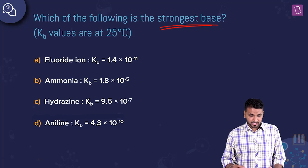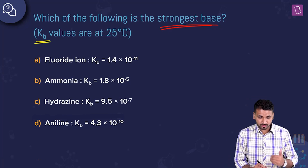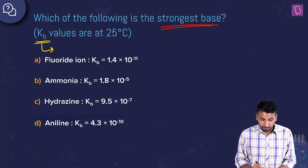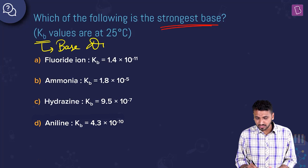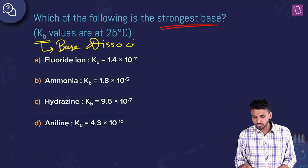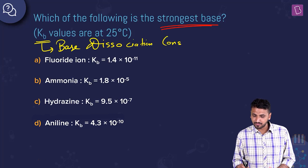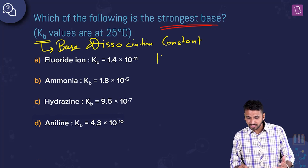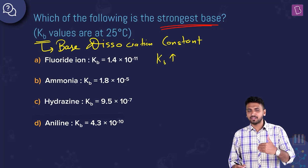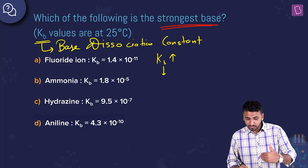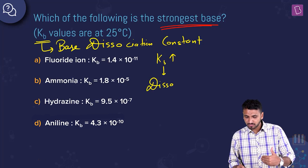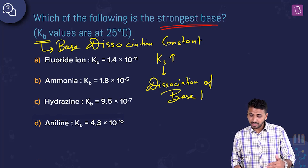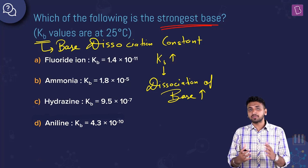Let's understand what Kb is. The name is base dissociation constant. So if the value of Kb is high, then the dissociation of the base is going to be high — that's what the value of Kb signifies.